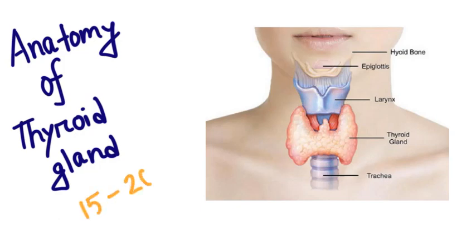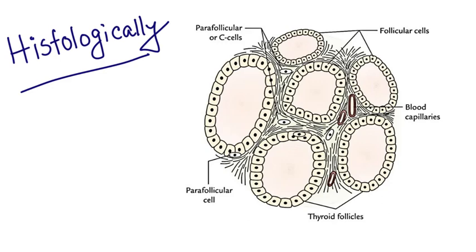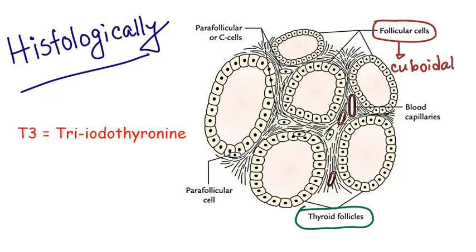In adults, its normal weight is 15 to 20 grams. Histologically, thyroid gland is composed of large numbers of closed follicles. These are functional tissues of the gland. The follicles are lined with cuboidal epithelial cells. They secrete the thyroid hormones T3 and T4. T3 is triiodothyronine and T4 is thyroxine.